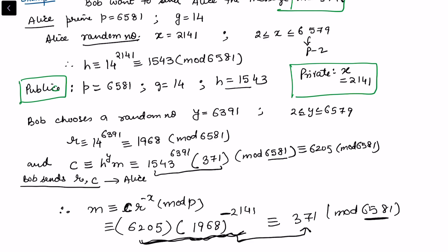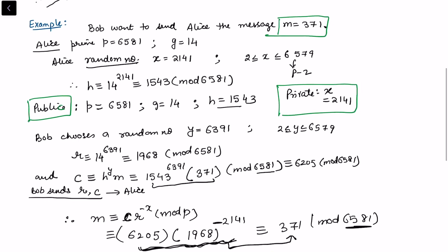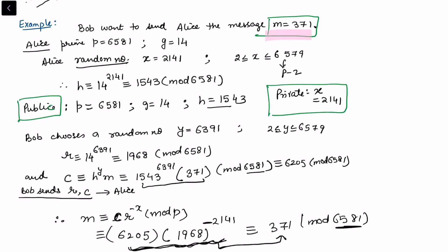But just assuming that somebody solved this one and they find it in the least remainder when it is divided by 6581, we get 371. So this is the original message. As you can see, Bob sent 371 and Alice has also deciphered that it is the same message, 371.